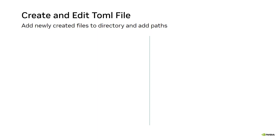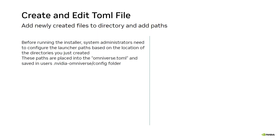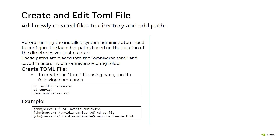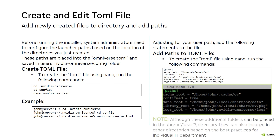There must be an omniverse.toml file created in the .NVIDIA-Omniverse/config directory. This enables you to point the launcher to the paths you previously created. Use nano or your preferred text editor to create the omniverse.toml with the commands in the first block. The paths shown on screen are only examples — use the most appropriate directory paths for your organization. The important thing is that they exist and are valid in the omniverse.toml file. Remember to save and exit the TOML file when finished by pressing CTRL-O and CTRL-X.